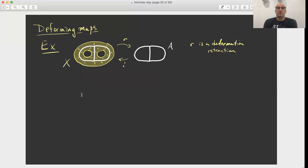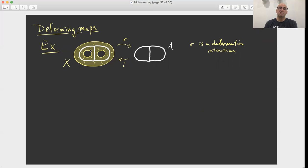So another example, maybe kind of pictorially. On the left, we have a yellow region in the plane bounded by three simple closed curves — so that's a surface with boundary. It's a disk minus two open disks, and inside of there there's a graph built out of those three white arcs. We'll call that graph A, and there's the inclusion of A into X, and then there's a retraction from X down to A.